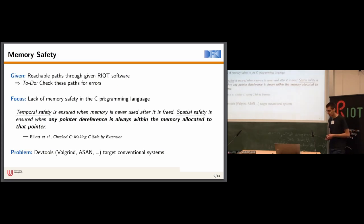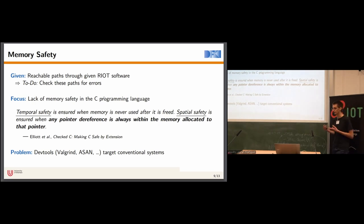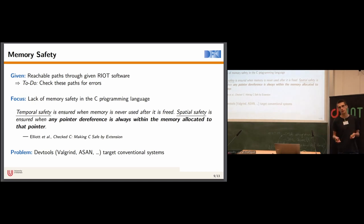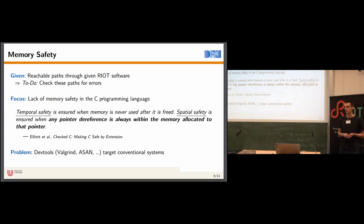We then explore possible execution paths through the URI parser process function. Both approaches — injecting inputs through peripherals or manually writing test harnesses for specific functions — allow us to enumerate reachable paths through RIOT software. As I mentioned in the beginning, our research is largely motivated by the detection of programming errors, so we also need an error model.